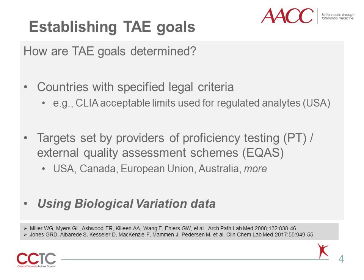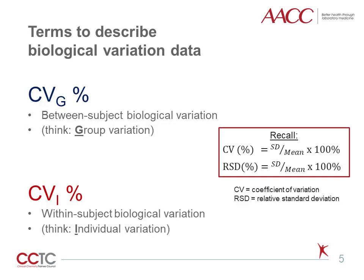For additional background on biological variation, as well as calculations like the reference change value (RCV) and index of individuality, listeners are referred to a September 2012 pearl on this topic by Danny Lee. Biological variation is a source of variance in laboratory test results. These data are commonly expressed as percent coefficient of variation (CV), or relative standard deviation (RSD). Both terms are equivalent and are calculated by converting variance to standard deviation, dividing SD by the mean value of the data set, and multiplying by 100%.